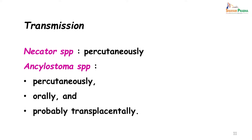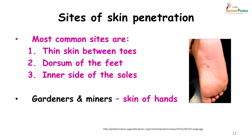Necator species are transmitted percutaneously. Ankylostoma species, besides percutaneous transmission, can also be transmitted orally and probably even transplacentally. The sites of penetration in the skin are usually the thin skin between the toes, the dorsum of the feet, and the inner side of the soles. In the case of gardeners and miners, the skin of the hands may also be a source of entry.